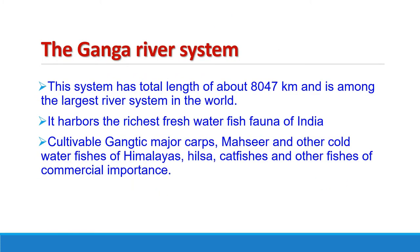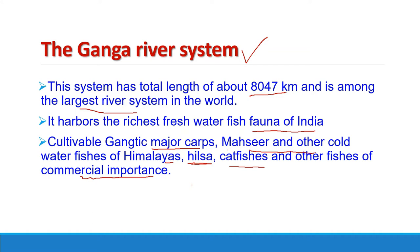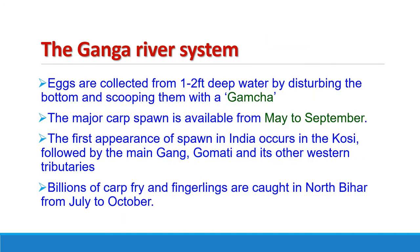The Ganga river system has a total length of about 8,447 km and is among the largest river systems in the world. It harbors the richest freshwater fish fauna of India, ranging from cultivable Gangetic major carps like Labeo rohita, Labeo kalbasu, Catla catla, to Mahaseer and other cold water fishes of the Himalayas, the important clupeid Hilsa, different catfishes, and a wide variety of other commercially important fishes. States like Bihar, UP, and West Bengal contribute about 50% of the country's total production in spawn collection.